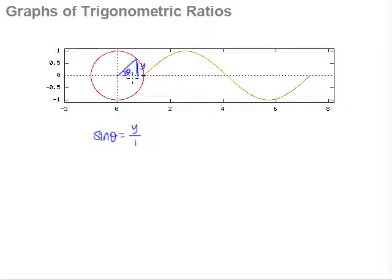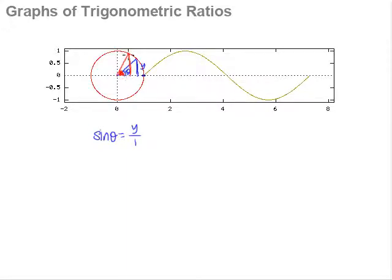Exactly what happens as our theta increases? Let's say theta is a small angle. As theta increases to become a little bigger — slightly greater than the original theta — we draw the same vertical line down, and we realize that the vertical line actually increases. So the y value actually increases with respect to theta.